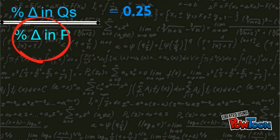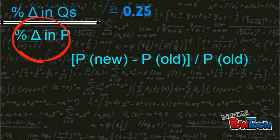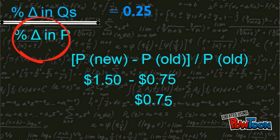By finding the percent change in price, you take the new price, which is $1.50, take away the old price, which is 75 cents, which equals 75 cents. Now you divide 75 cents by the old price, which equals 1.